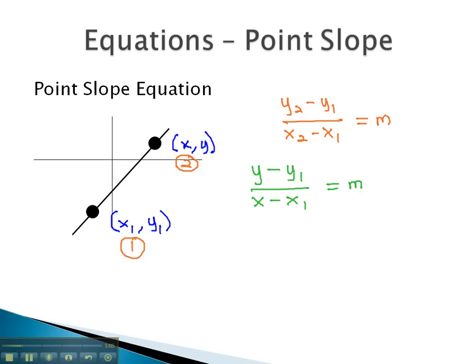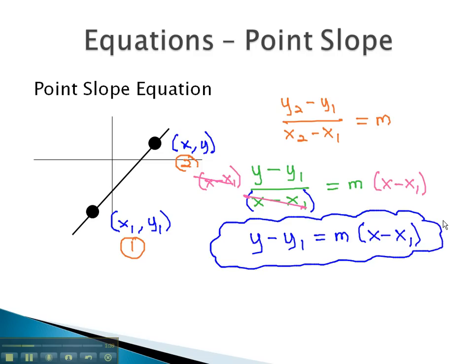With this equation, we're simply going to clear ourselves of the fraction. We do that by multiplying by that denominator, x minus x1, on both sides. As we do, the x minus x1's divide out, and we're simply left with the equation, y minus y1 equals m times x minus x1. This formula is what we will call the point-slope formula.